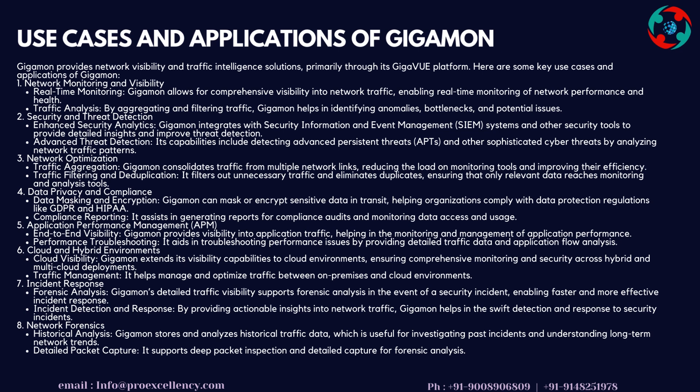Use Case 5: Application Performance Management — End-to-End Visibility provides visibility into application traffic, helping in the monitoring and management of application performance. Performance Troubleshooting aids in diagnosing performance issues by providing detailed traffic data and application flow analysis. Use Case 6: Cloud and Hybrid Environments — Cloud Visibility extends Gigamon's capabilities to cloud environments, ensuring comprehensive monitoring and security across hybrid and multi-cloud deployments. Traffic Management helps manage and optimize traffic between on-premises and cloud environments.